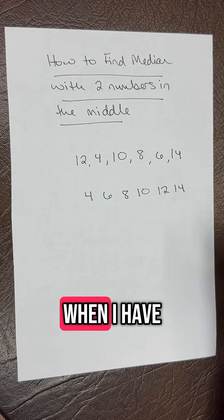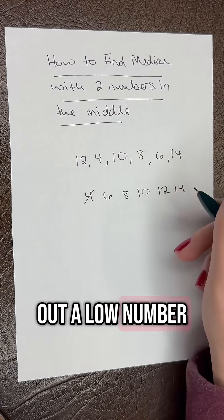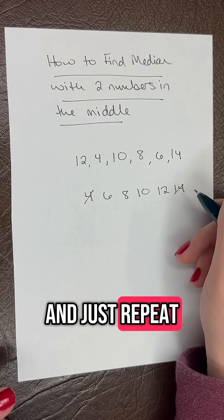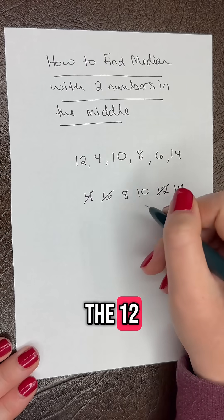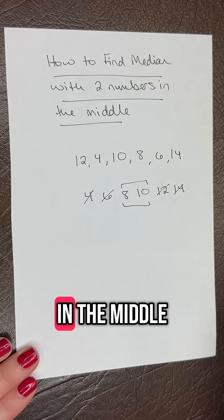So what I like to do when I have a larger data set, start by crossing out a low number, cross out a high number, and just repeat this until you end up with the numbers in the middle. So cross out the 6 and the 12, then we're left with the 8 and the 10 in the middle.